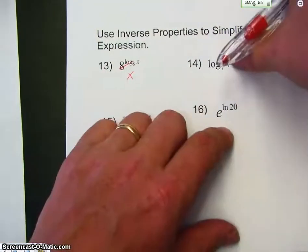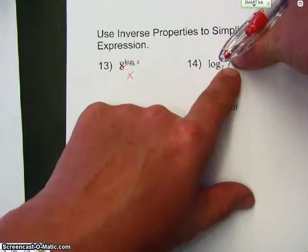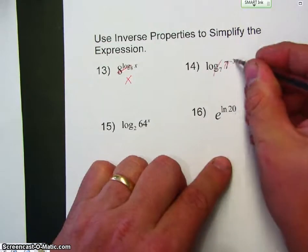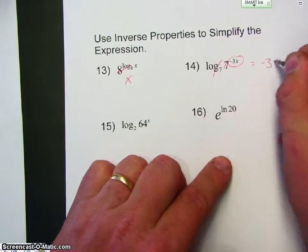Same thing here. The base of this log and this are the same, so those cancel. I'm just left with that, so my answer is negative 3x.